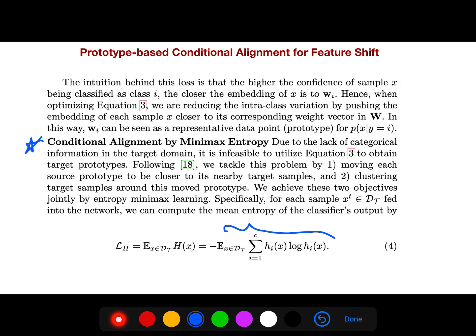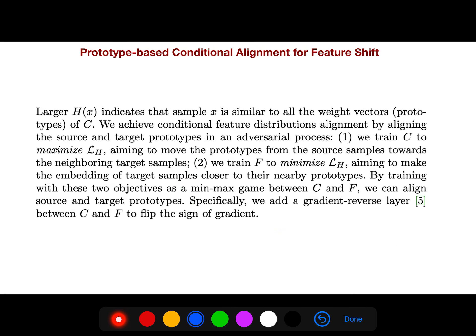So larger H here, when it is larger, it indicates that sample X is similar to all weight vectors of C. We achieve conditional feature distribution alignment by aligning the source and target prototypes in the adversarial process. So we train C to maximize L, the loss, aiming to move the prototypes from the source samples toward the neighboring target samples. And then we train F to minimize the loss, aiming to make the embedding of target samples close to their nearby prototypes.